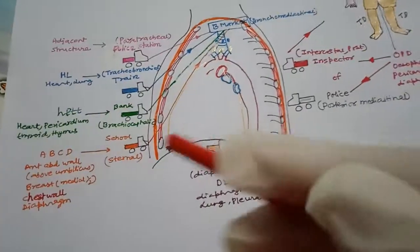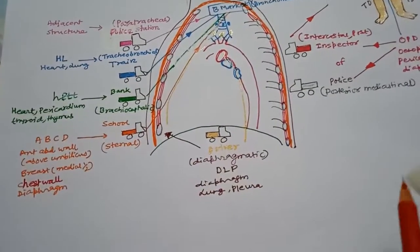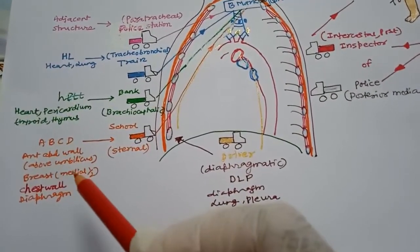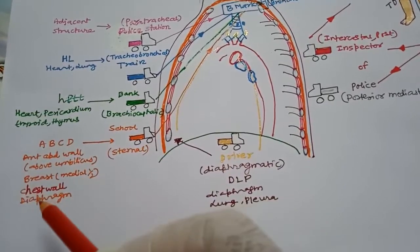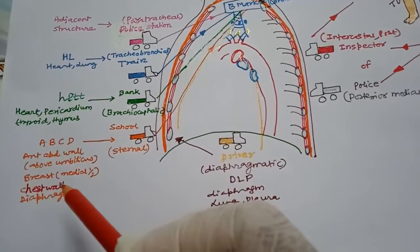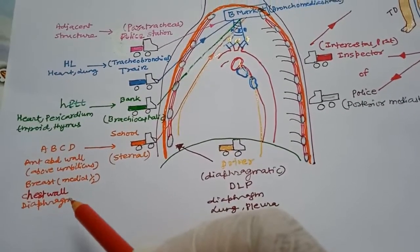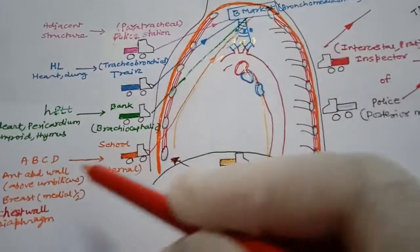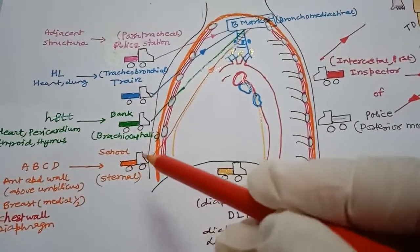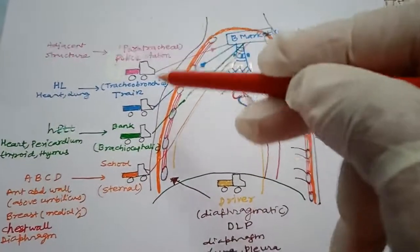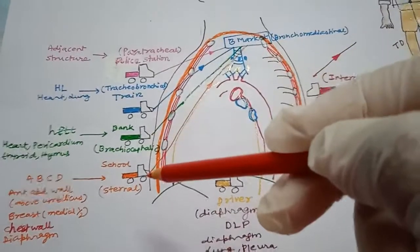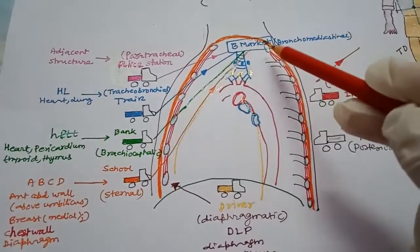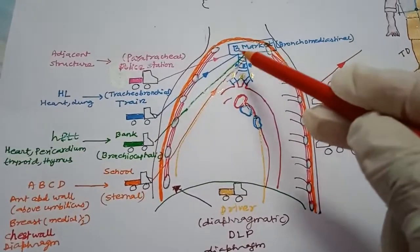Continuing the ABCD mnemonic for the external or paratracheal lymph node: A for anterior abdominal wall above the umbilicus, B for breast medial half, C for chest wall, and D for diaphragm. Lymph from these structures goes to this school node.